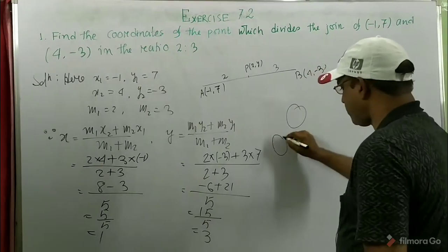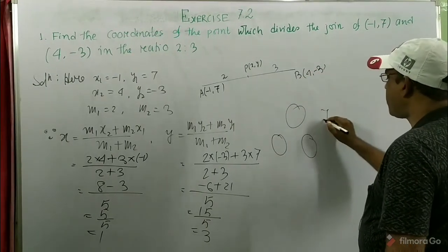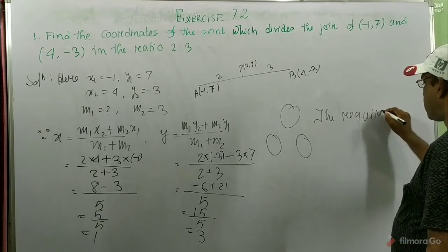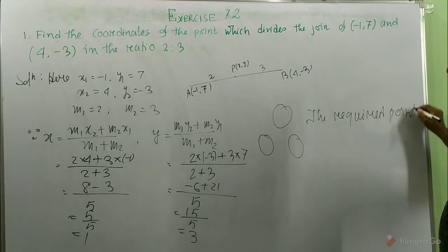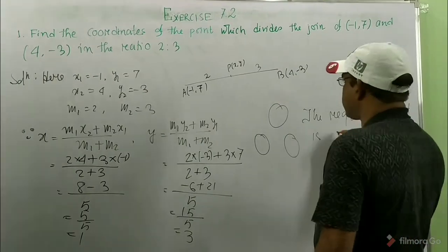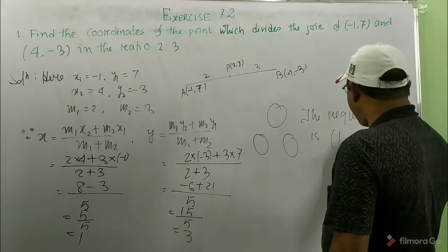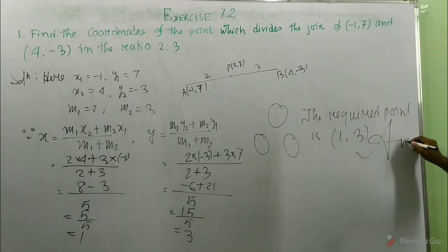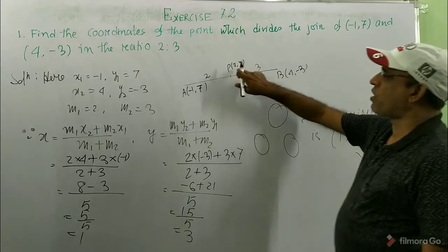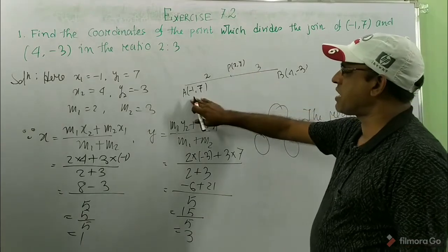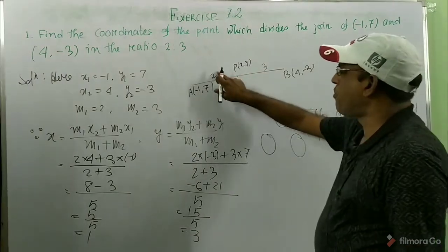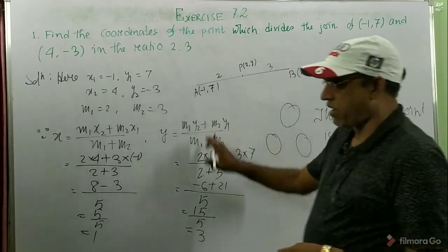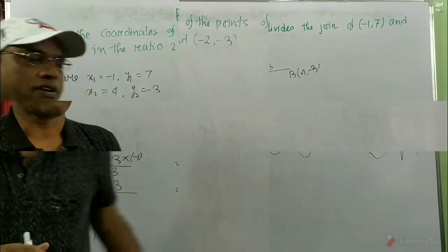Therefore, the required point is (1, 3). This is our answer. So this is the point (1, 3). Just these are ready-made given values — m1, m2 given — using the formula we ultimately get our answer. Using this formula we can easily find the value.